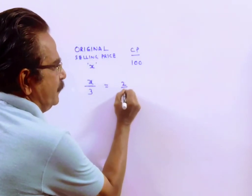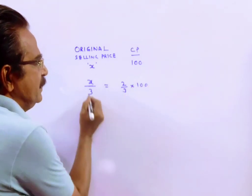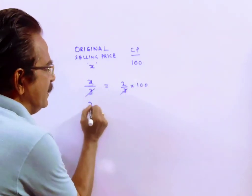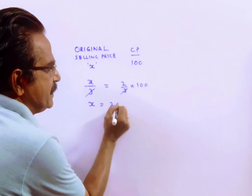Cost price is 100. 2/3 of the cost price, so these two are equal. Therefore, the original selling price is 200.